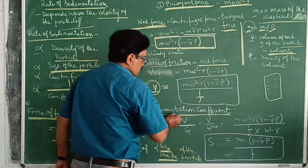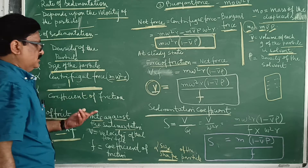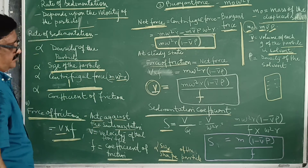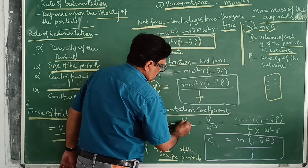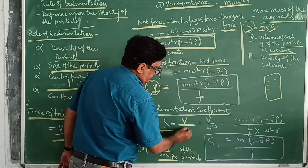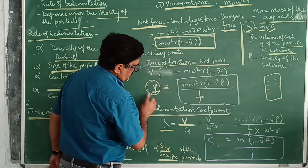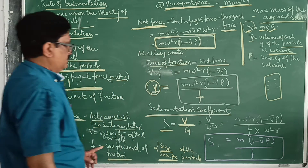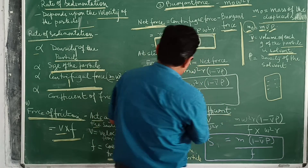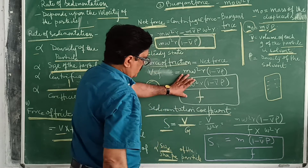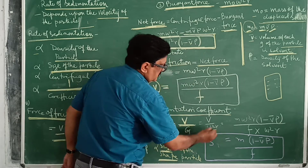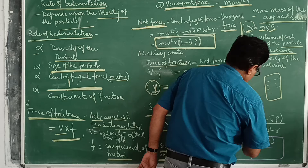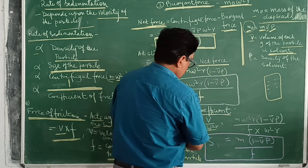Another term we often use, especially in zoology, is the sedimentation coefficient, S. The sedimentation coefficient is equal to v divided by g, where v is the velocity and g is the gravitational field. Substituting the value of v, we get S = m·ω²·r·(1 − v̄ρ) / f, divided by the gravitational field ω²·r.